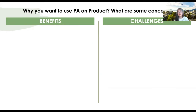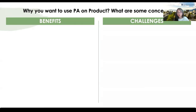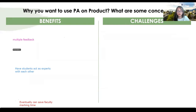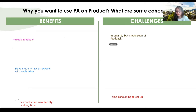Now we want to understand your reason for wanting to use student peer assessment, especially on product, and what some concerns you have are. Using the annotate tool under the View option at the top, please use the type text tool and type your benefits and challenges onto this screen. Yes — peer assessment, especially in summative use, has been used in the classroom to save faculty marking time. One challenge is that it can be time-consuming to set up, especially when using a third-party tool like Peer Scholar. You need to set some time aside to understand the interface.